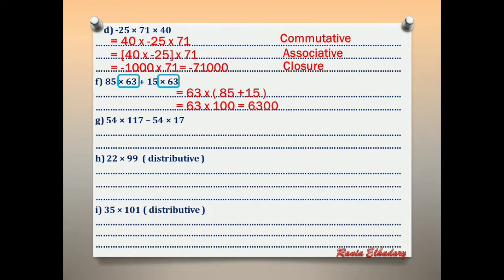Letter G: 54 × 117 − 54 × 17. Circle the repeated number 54. Write 54 × (117 − 17). This is the distributive property. 117 − 17 = 100. 100 × 54 = 5,400.